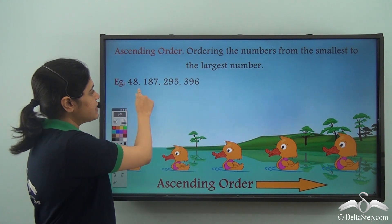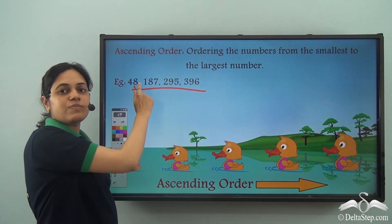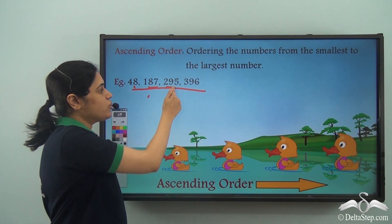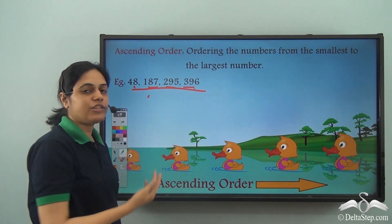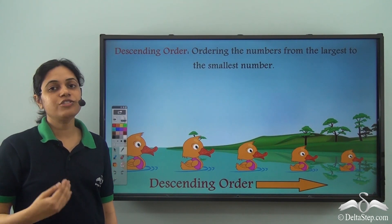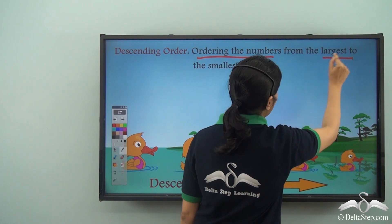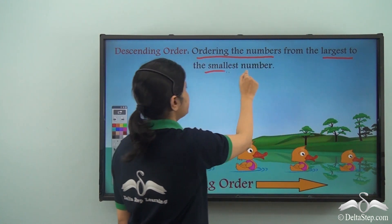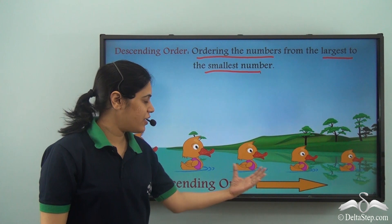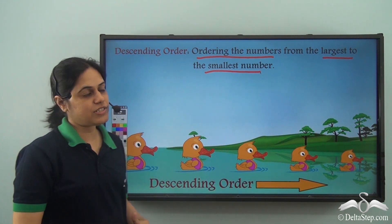Say for example these numbers — 48 is smaller than 187, which is smaller than 295, which is smaller than 396. And what is descending order? Just the opposite: ordering the numbers from the largest to the smallest number, just like these ducks are arranged from the biggest to the smallest duck.